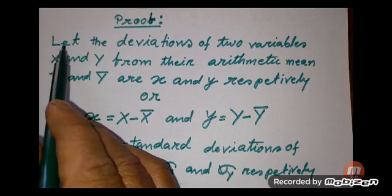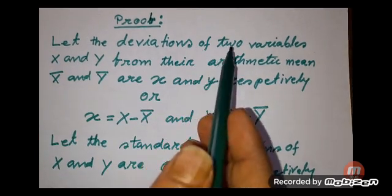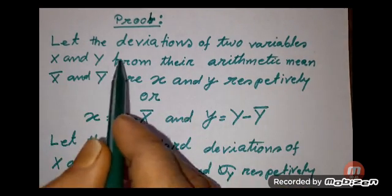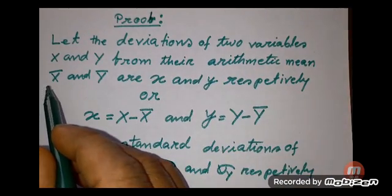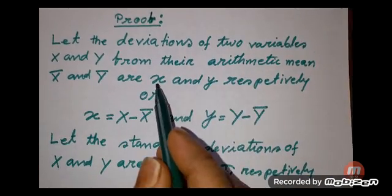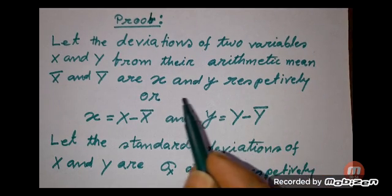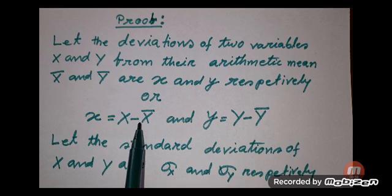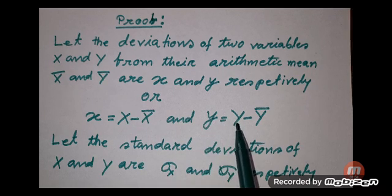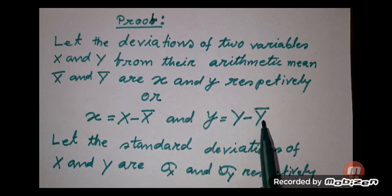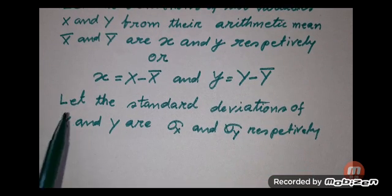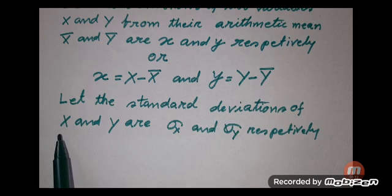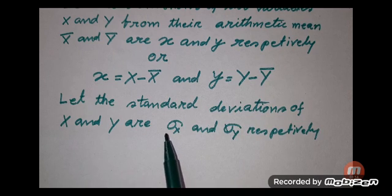Proof. Let the deviations of two variables x and y from their arithmetic means x-bar and y-bar be denoted as small x and small y respectively, where small x equals capital X minus x-bar, and small y equals capital Y minus y-bar. Let the standard deviations of x and y be sigma-x and sigma-y respectively.